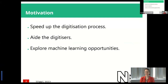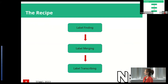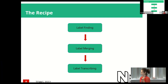How are we going to do this? This is the recipe. Step one: label finding — you've got four images, how can we locate those labels? Step two: merge the labels together. Step three: transcribe the labels. I'm going to focus on the first two, because we're keeping transcription separate in our system.